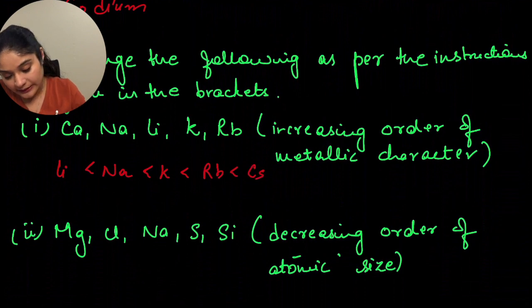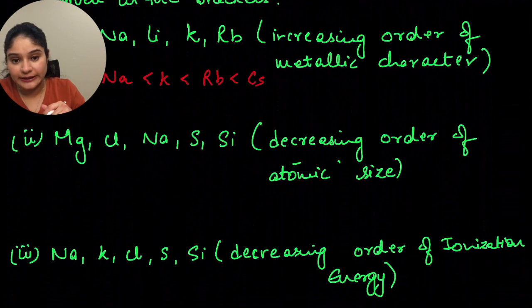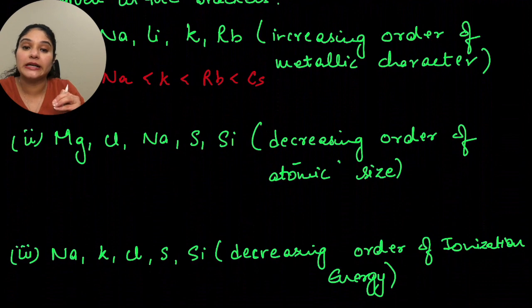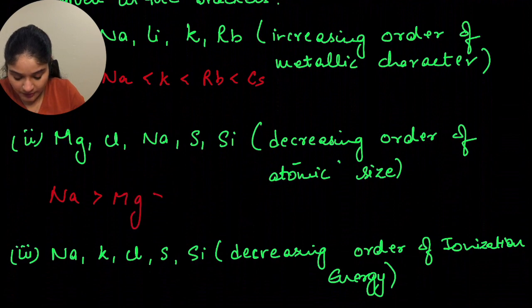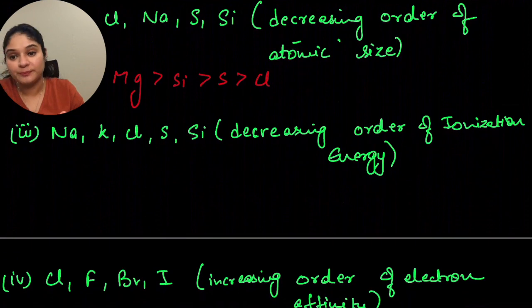The next arrangement: magnesium, chlorine, sodium, sulfur, silicon — decreasing order of atomic size. Atomic size has to decrease, and you have to write that in the decreasing order. So that would be: sodium, magnesium, silicon, sulfur, chlorine.